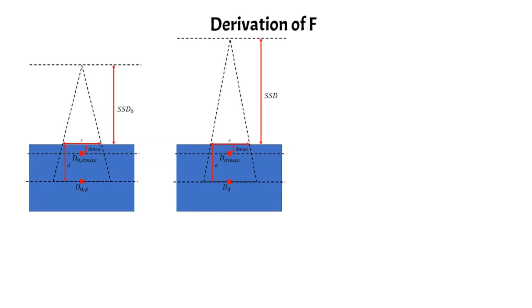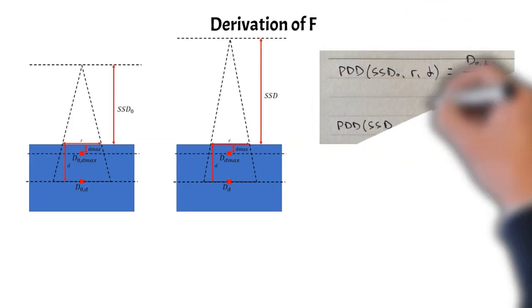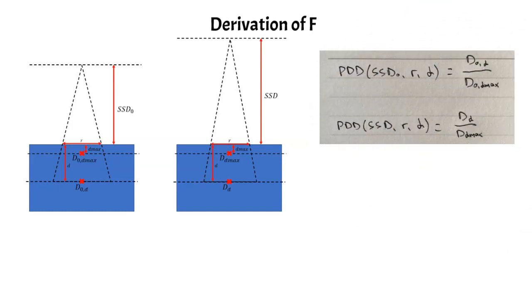And each of these specific scenarios has its own percent depth dose. So using the definition of the PDD, we can write down the definition here, and for the SSD knot it's just the ratio of those two doses, and then for the SSD it's another ratio of those doses that are shown in the figure on the left. So this is just nothing crazy going on here, it's just the definition of the PDD.